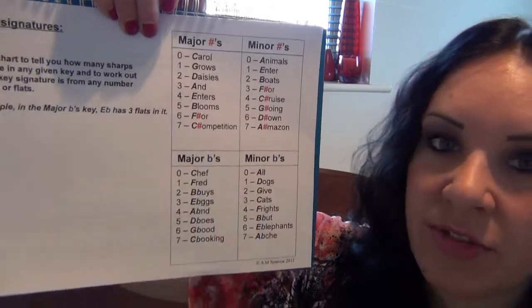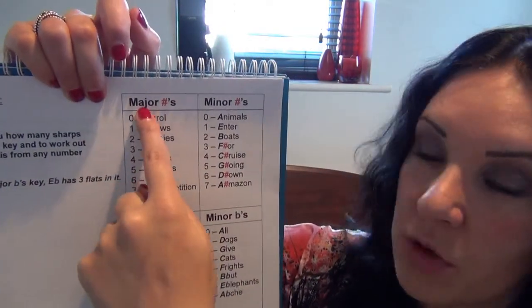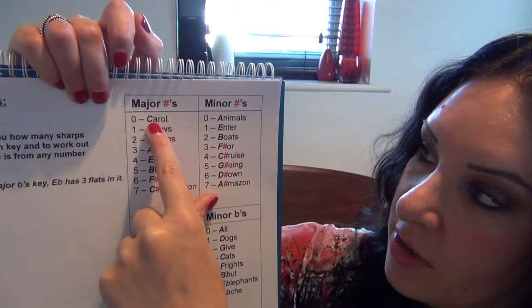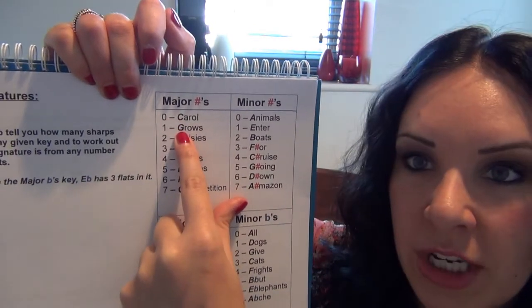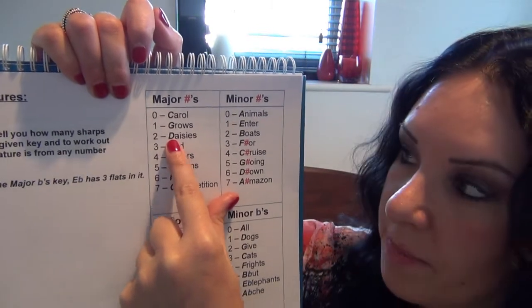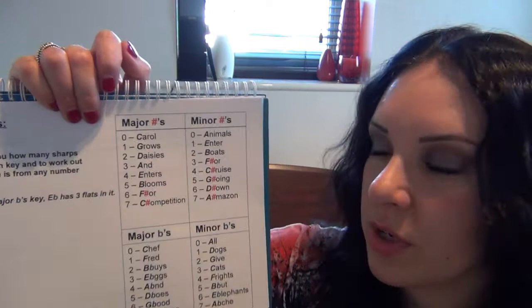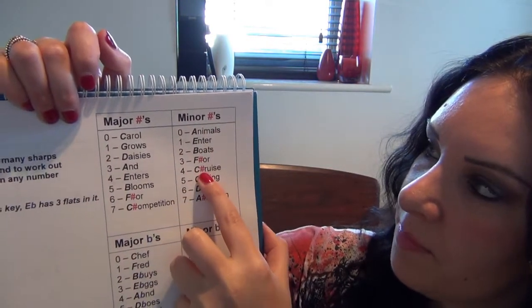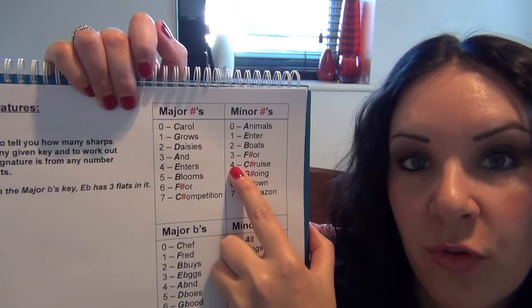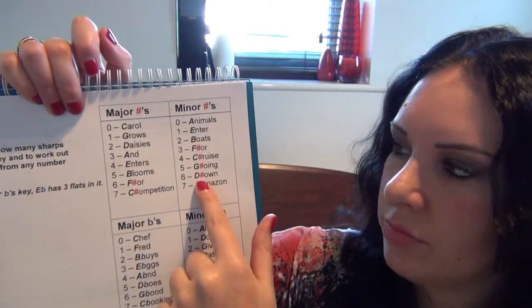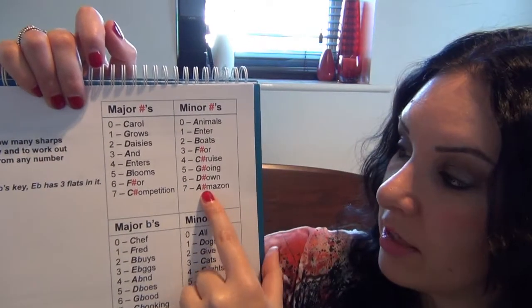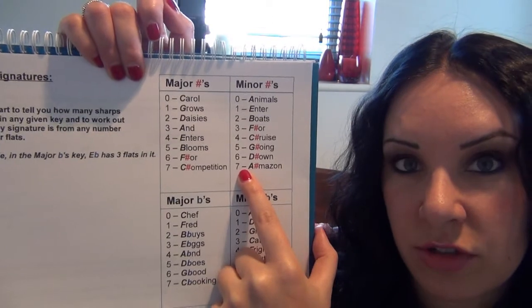The numbers 0 to 7 are the number of sharps or flats. The key of C has no sharps, the key of G has one sharp, the key of D has two sharps, the key of A has three sharps, and so on. Same would be for, say, C sharp minor — we know it has four sharps. If someone asks how many sharps are in A sharp minor, have a look at this chart and you would know that A sharp has seven sharps.